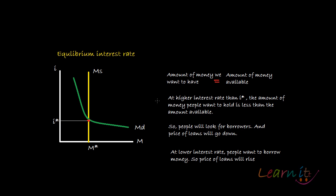We haven't discussed how money supply itself could be changed — it could be changed, but that is not the agenda of this recording. So money supply is fixed, and this is the amount of money we want to have. Their intersection determines the equilibrium interest rate and the quantity of money which we are going to demand at a given level of supply.